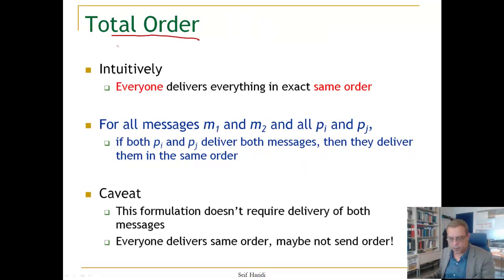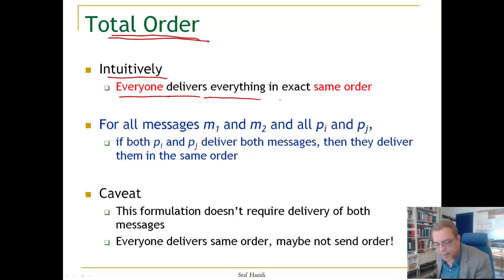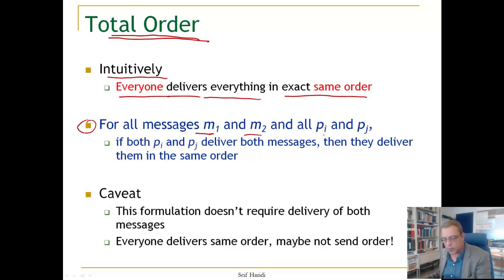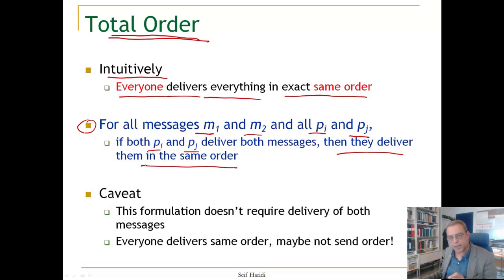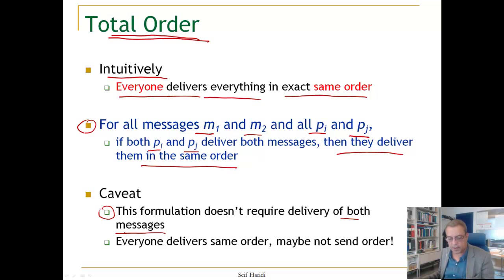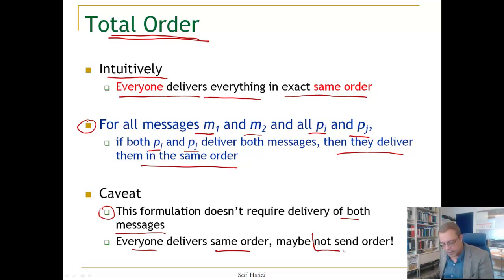So what is total order? Intuitively, total order means everyone delivers everything in the exact same order. If we have two messages M1 and M2 and two processes Pi and Pj, if Pi and Pj both deliver both messages, then the delivery is in the same order. The most important thing is the delivery in the same order — it doesn't matter if it's in FIFO order or not. This formulation also does not require delivery of both messages; it just says if they deliver both, then they deliver in the same order, and it could be not in the send order.